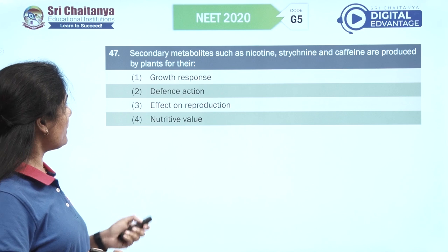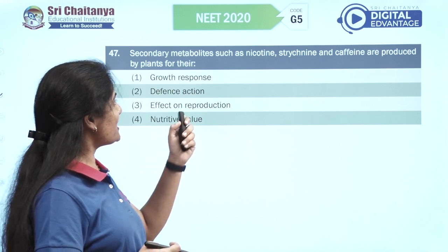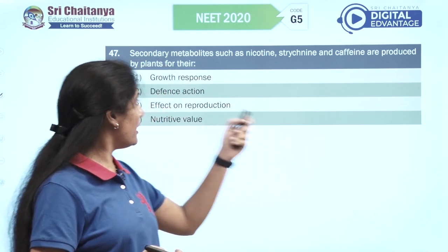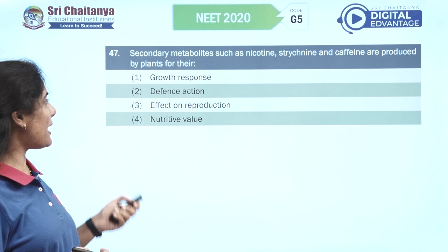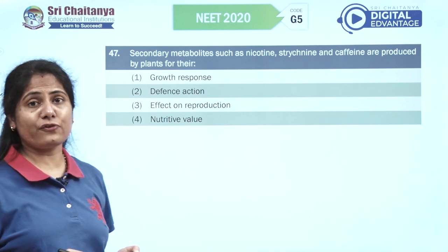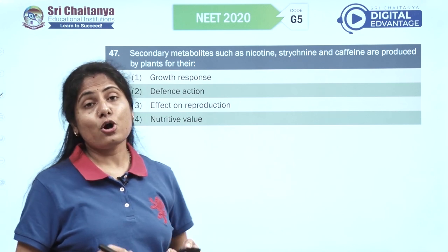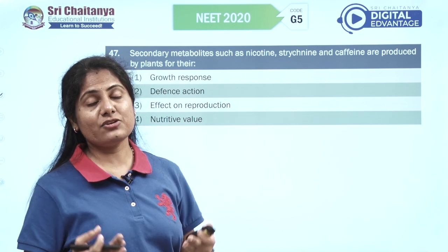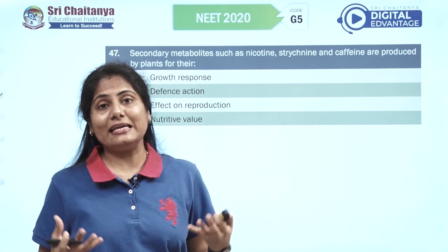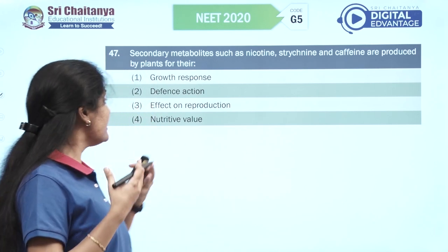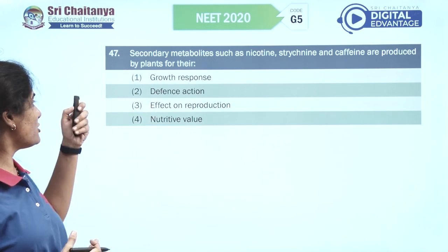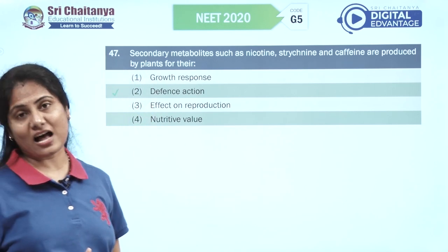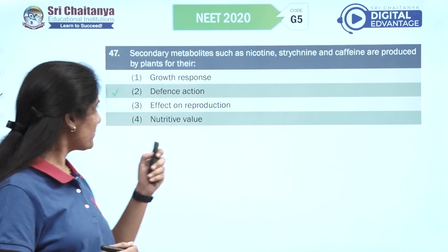Secondary metabolites such as nicotine, strychnine, and caffeine are produced by plants for — obviously they produce such secondary metabolites in their defense. So defense action is the right option.